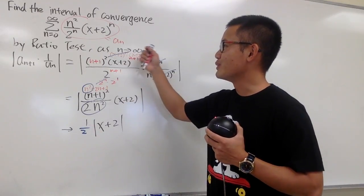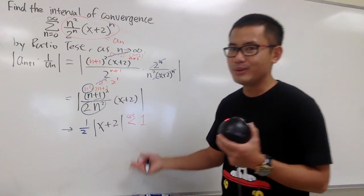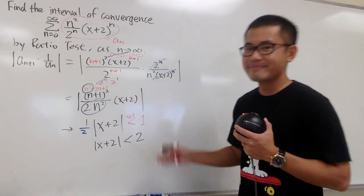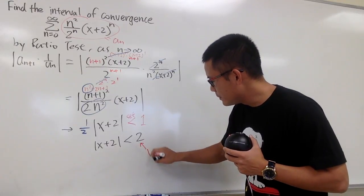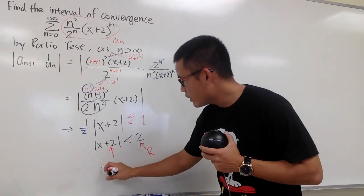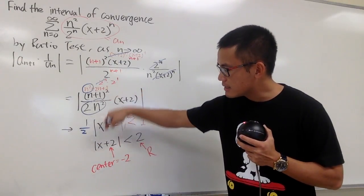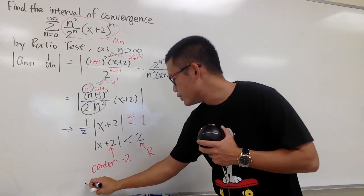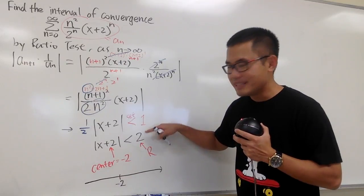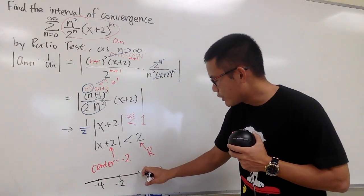This is the result of the limit when n goes to infinity. We have to make sure that this is less than 1. Multiplying by 2 on both sides, we get the absolute value of x+2 less than 2. From here, the radius of convergence is 2, and the center is at negative 2 because we have |x − (−2)|. On a number line, the center is at −2, the radius is 2, so we go left to −4 and right to 0.